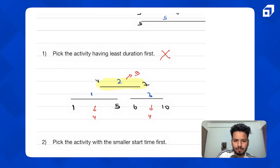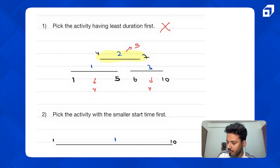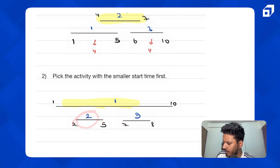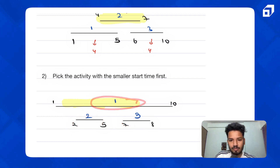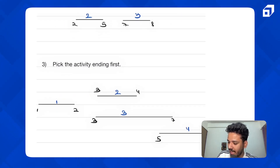What else can we do? The next idea: pick the activity with the smallest start time first — the activity which starts earliest. But if we pick an activity that starts early, it may end very late and block all others. In the counterexample we can only do one activity with this approach, whereas the answer is two. So this approach also fails.